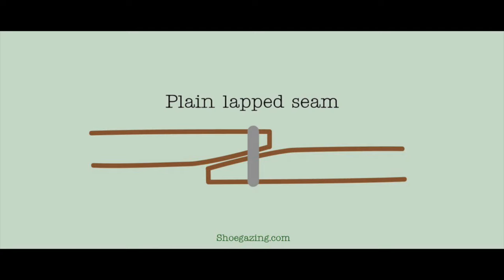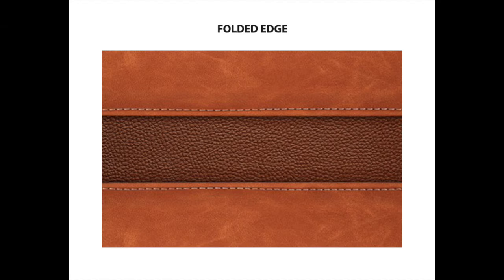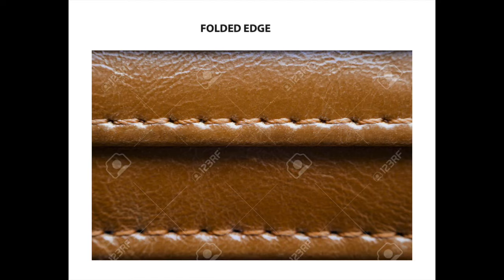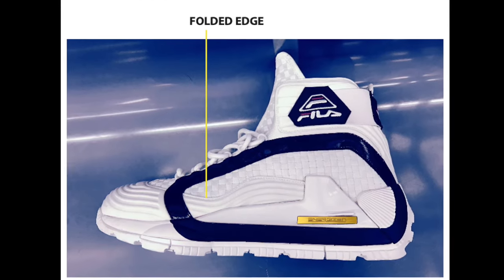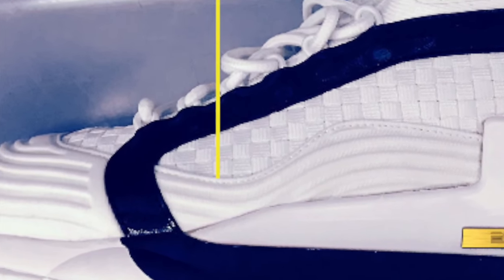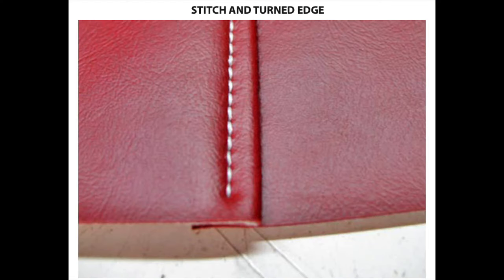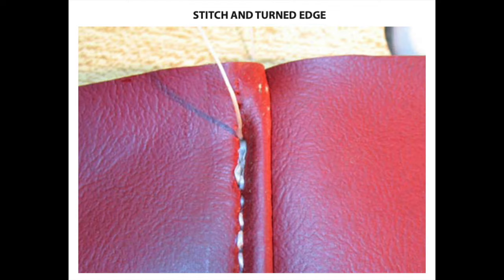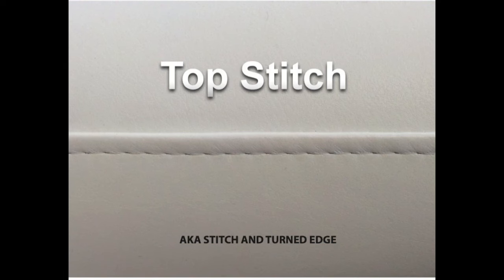One of the first of the three seams is the folded edge seam. A folded edge is very similar to a normal seam except the raw edge is not showing — it's folded over and stitched down so you can't see it. Next is the stitch and turn edge, which looks like a folded edge except you can't see the stitch line. That's because the stitching is done on the inside and then the panel on top is folded over — hence 'stitch and turn' — so you can't see the stitch line but you can see a nice clean folded edge.